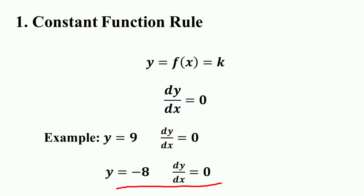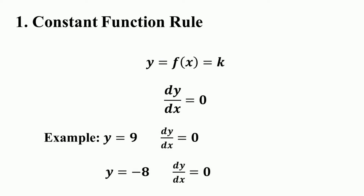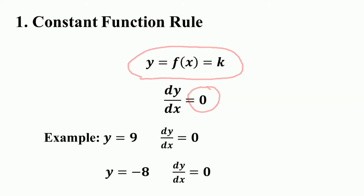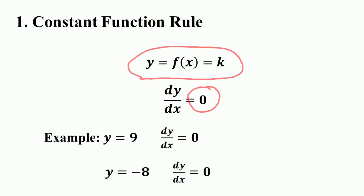Similarly, if y = -8, then the derivative of -8 is also equal to zero. So for any number k, if f(x) = k, then f'(x) is always zero.